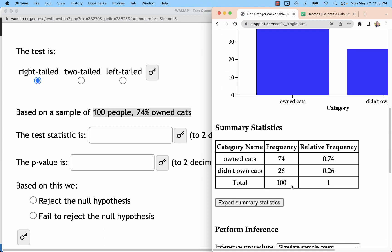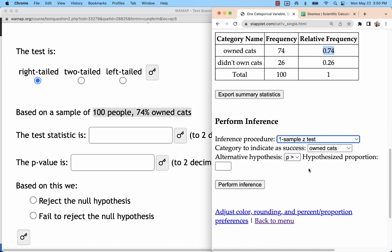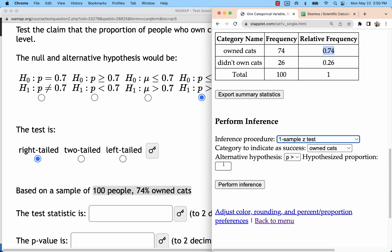That would be 26 here who don't own cats. And I'll just check my numbers there. Got my total. There's my 74%.